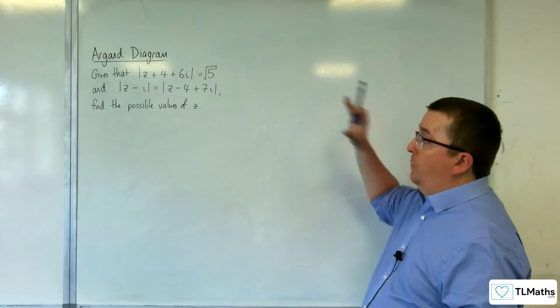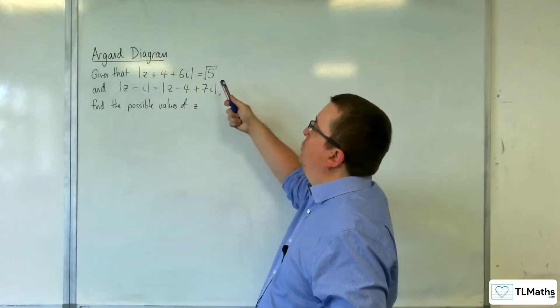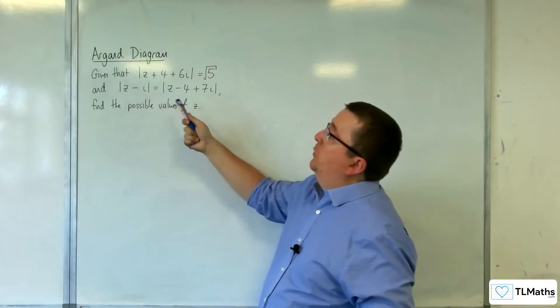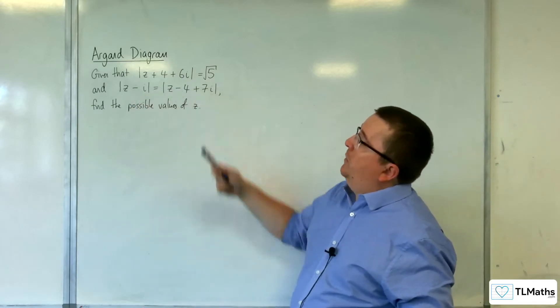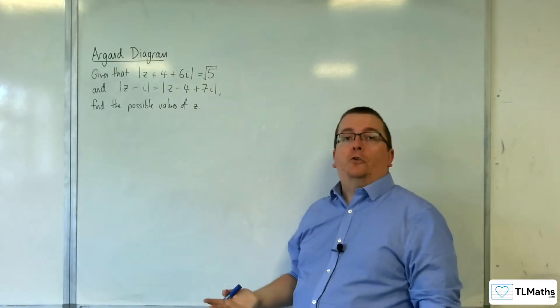So in this video we're going to be working through this problem where we've got that the modulus of z plus 4 plus 6i is equal to root 5 and the modulus of z take away i is equal to the modulus of z take away 4 plus 7i. And we need to find the possible values of z that satisfy both of those equations.